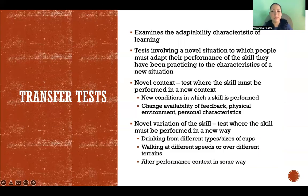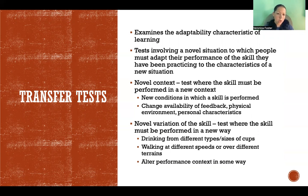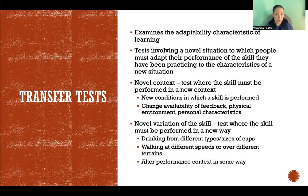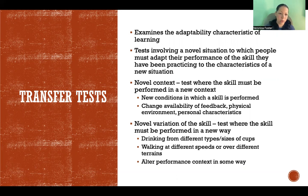Transfer tests examine the adaptability characteristic of learning. They involve a novel situation where you have to adapt your performance of a skill to new characteristics. There are two variations: a novel context or a novel variation of the skill. For a novel context, maybe you were receiving augmented feedback during practice but now you're doing the same skill without feedback, or in a completely different physical environment, or with different personal characteristics like fatigue or alertness.